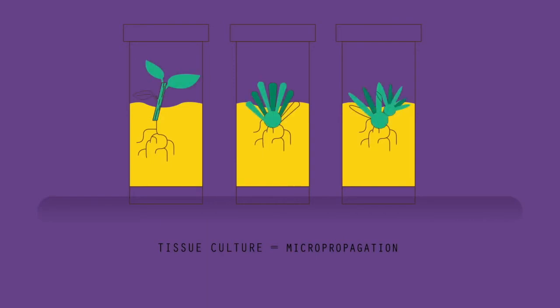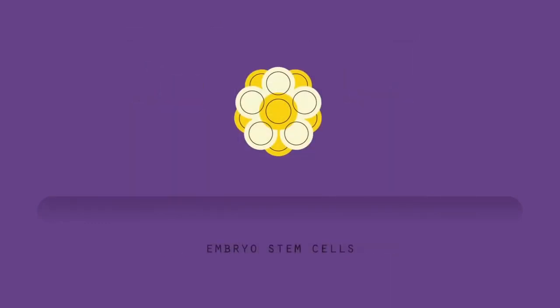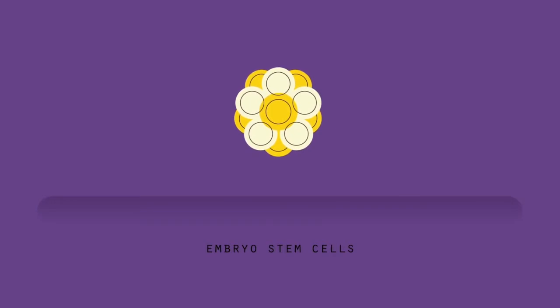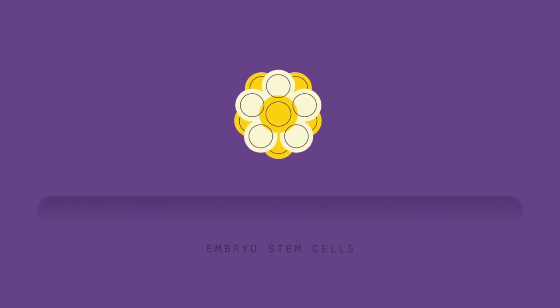Animals can also be cloned, but different techniques need to be used. In animals, only embryo stem cells have the capability to differentiate into all the different types of cells found in an adult. There are two methods you can use.